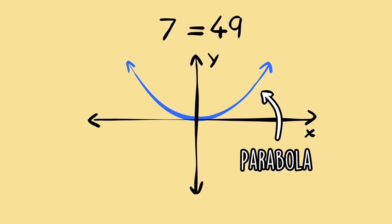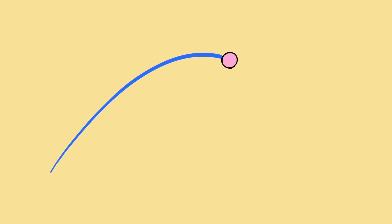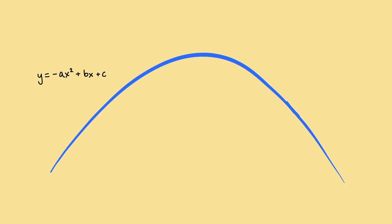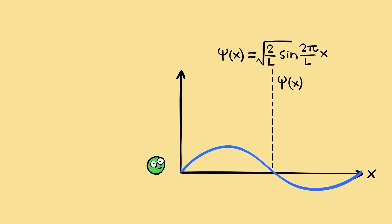Some functions describe real-world phenomena. For example, if you throw an object in the air, it'll trace out the path of an upside-down parabola. Just like this function describes the behavior of a thrown object, the wave function describes the behavior of a quantum particle.